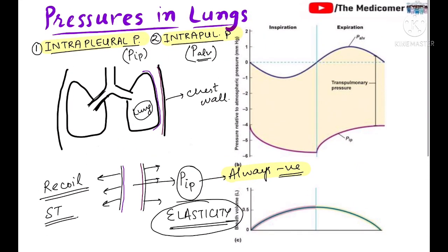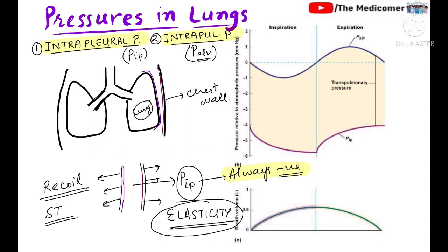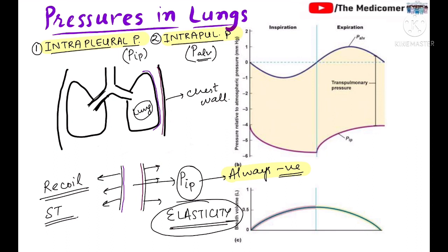So to summarize the intraalveolar pressure curve: initially it equals atmospheric pressure. During inspiration, as the alveoli expand, pressure decreases; then gas molecules enter and pressure rises back to atmospheric. During expiration, as alveoli start decreasing in size due to compression, pressure increases; then air goes out and the pressure equalizes back to atmospheric pressure.